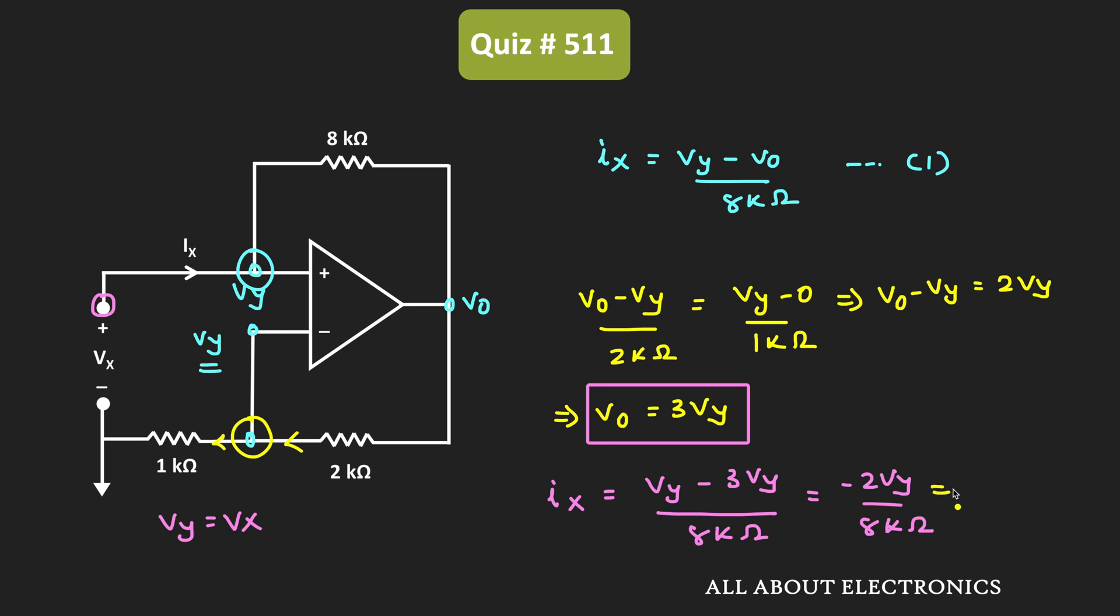So from this, we can write this expression as Vx divided by Ix is equal to 8 kilo ohm divided by minus 2 and that is equal to minus 4 kilo ohm. So from this we can say that the ratio of this Vx divided by Ix is equal to minus 4 kilo ohm.